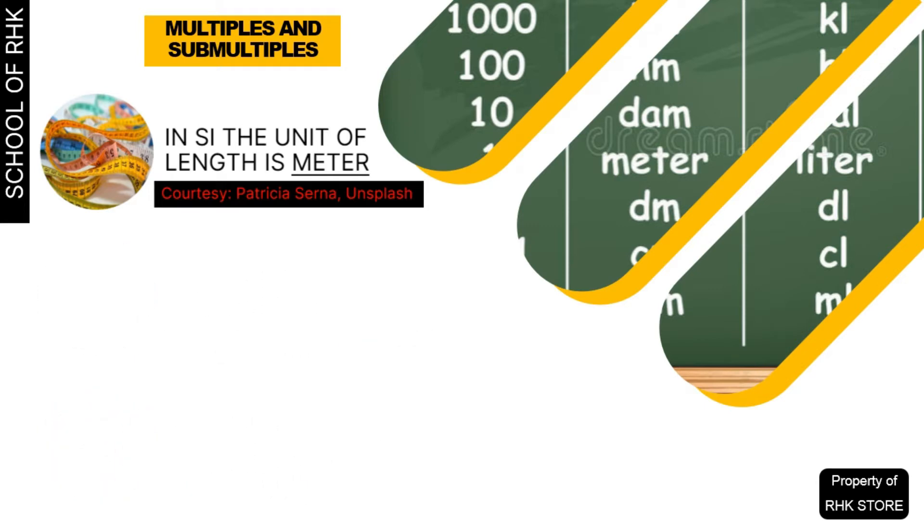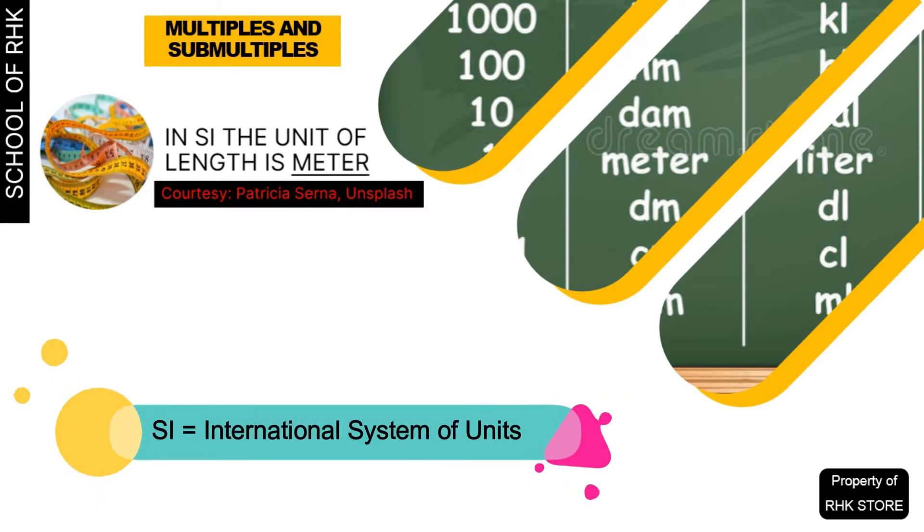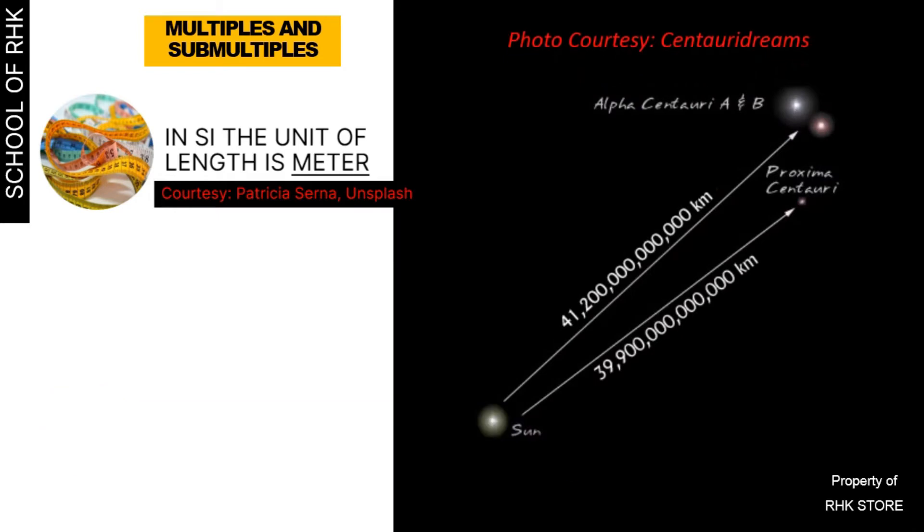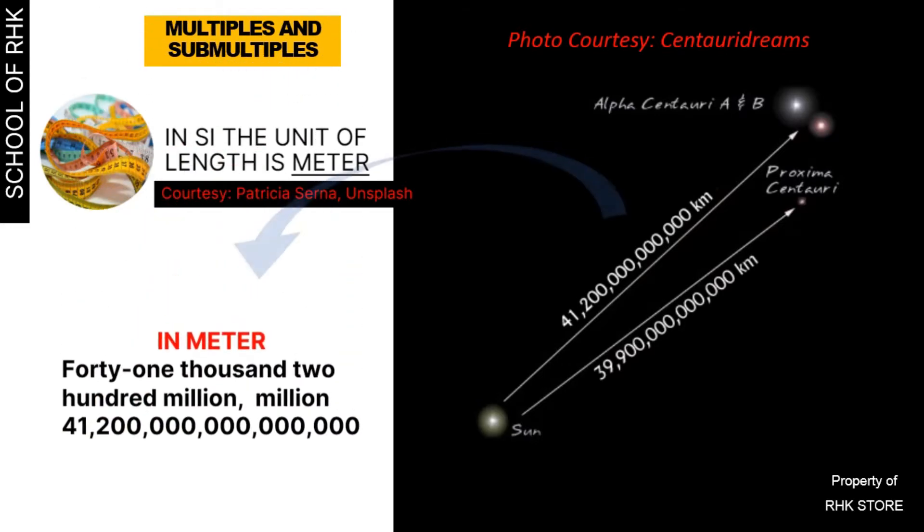For example, the length measurement unit meter is too small a unit to measure the distance between the sun and the nearest star, Alpha Centauri A and B. The distance is 41,200 million meters from the sun. In number, we can write 412000000000000, and that is the nearest star.